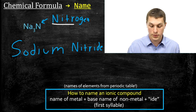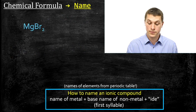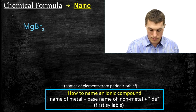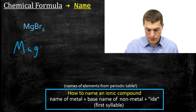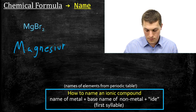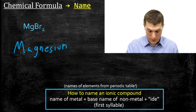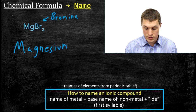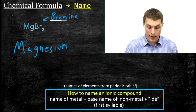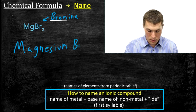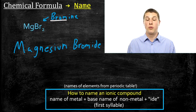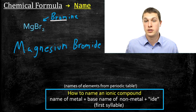Let's do one more: MgBr2. We go to the periodic table — Mg is magnesium, and that's our metal. We always list the metal first in ionic compounds. Then we look up Br, which is bromine. We keep the base name of the non-metal, which is 'brom', and add 'ide'. So MgBr2 becomes magnesium bromide. Going from chemical formula to name is relatively straightforward.